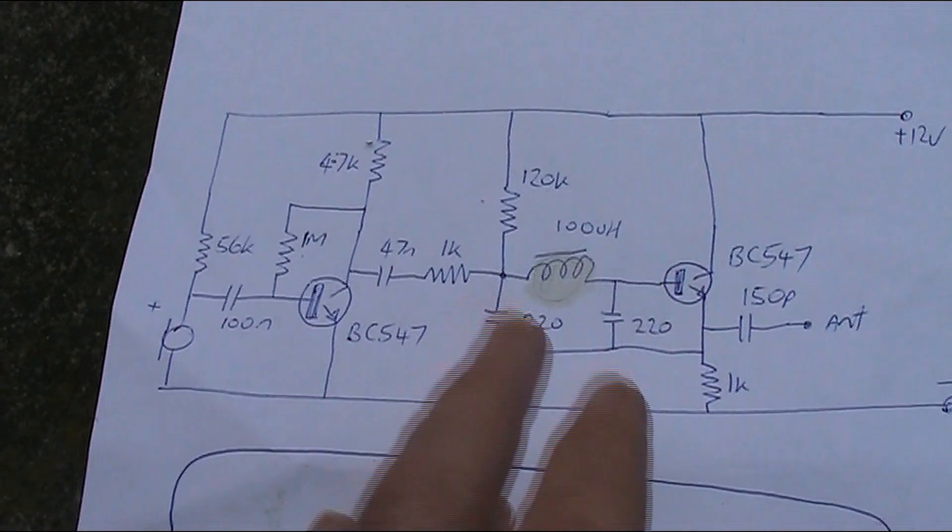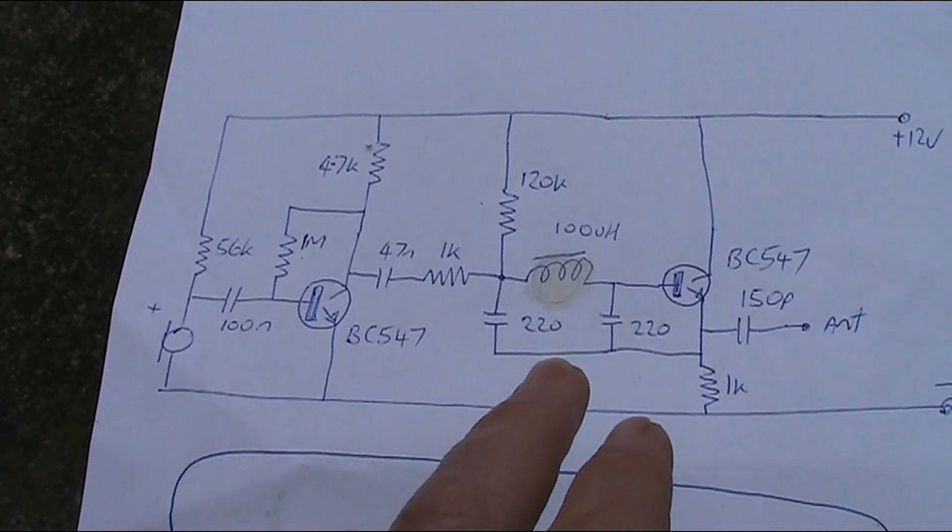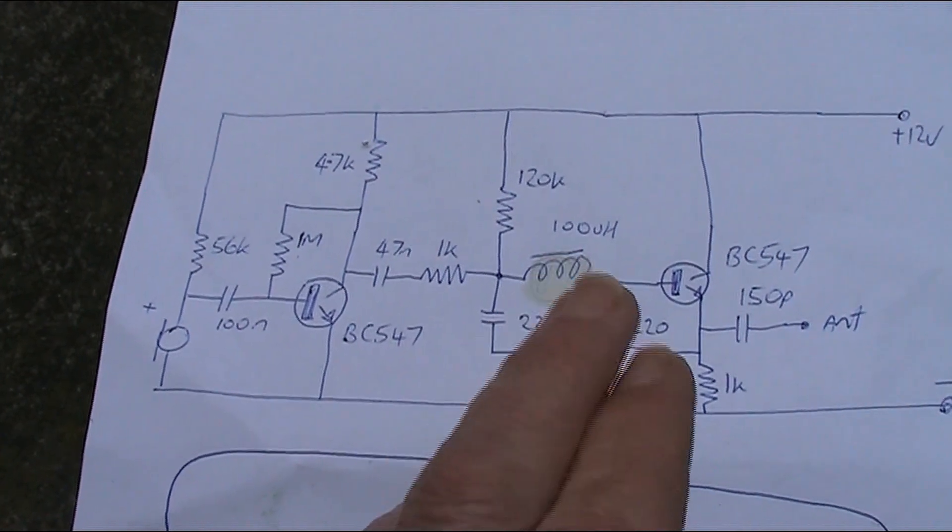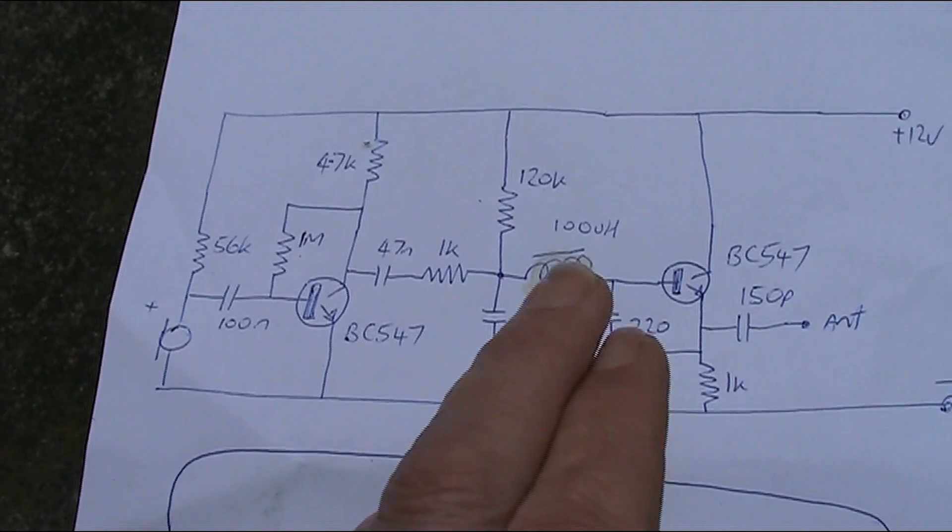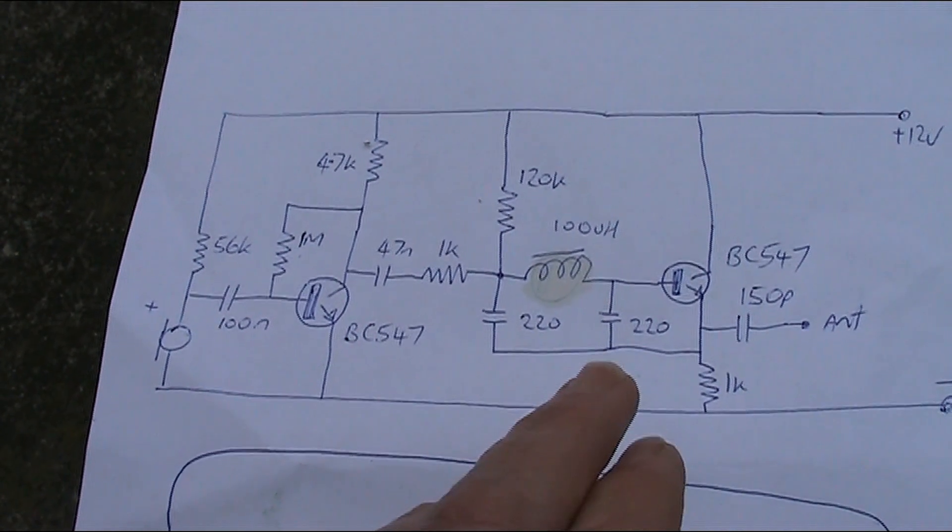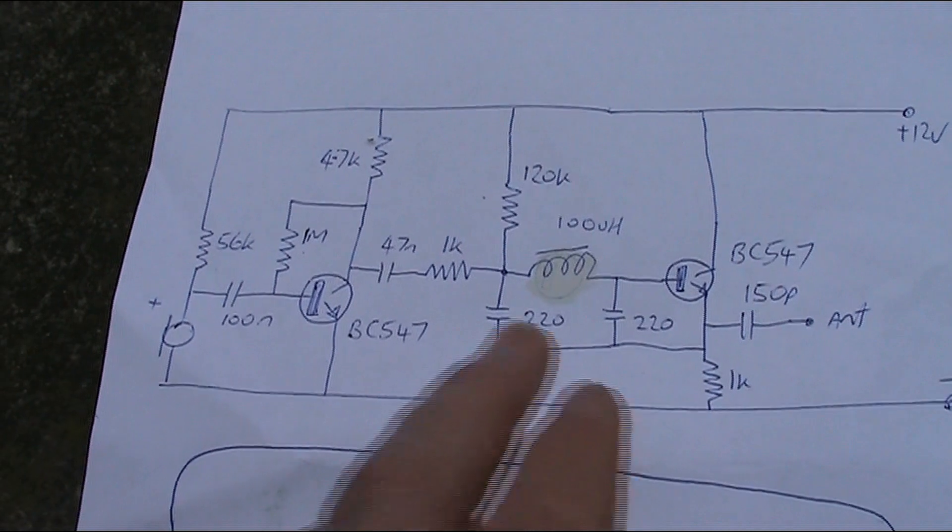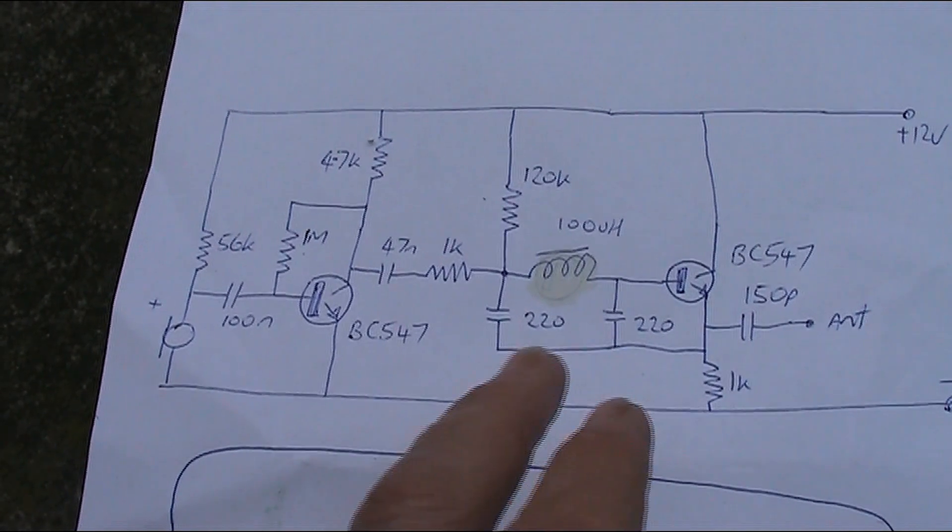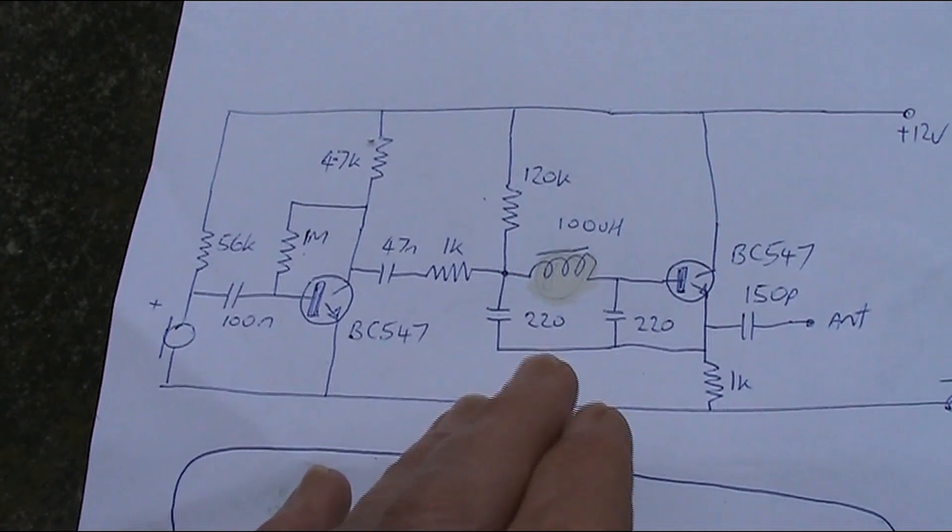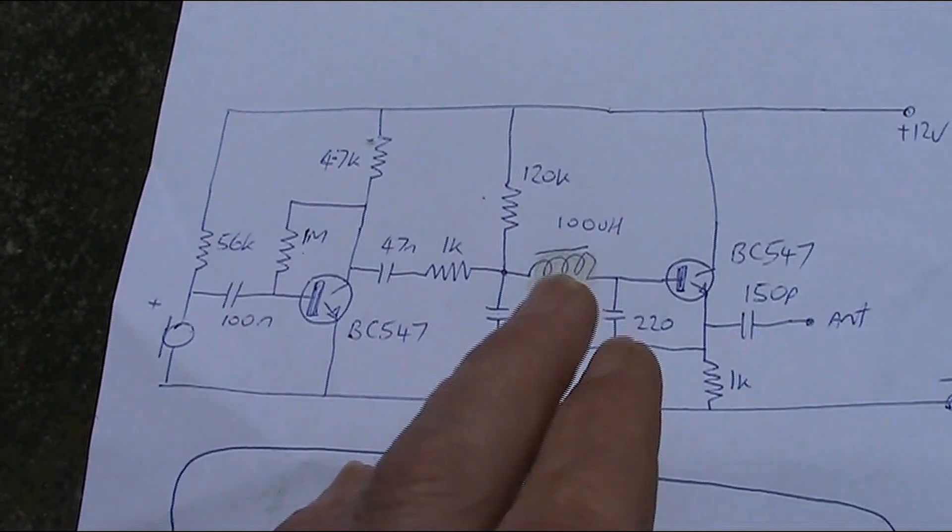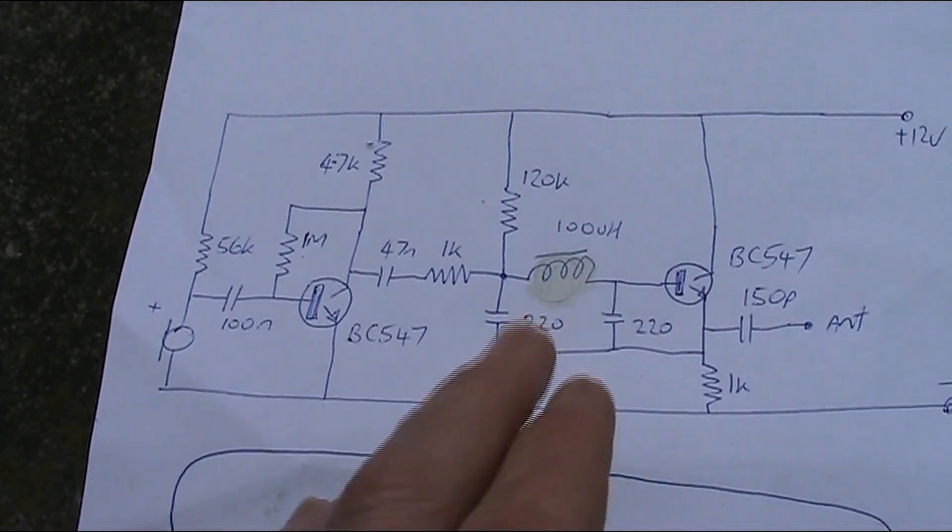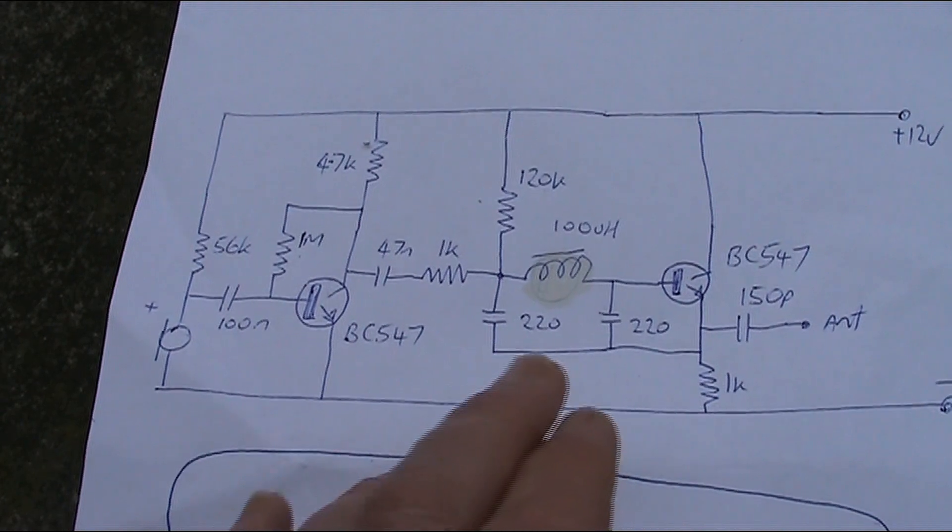This stage is just a one transistor RF oscillator stage. You vary the frequency by changing the coil. This is just a 100 micro-Henry RF choke, and there's two capacitors here, 220 pF, but I actually used 240 because that's the values that I had. Anyway, this gives around 1300 kHz. If you wanted to drop the frequency, then use a slightly bigger coil, or just increase the values of these capacitors.